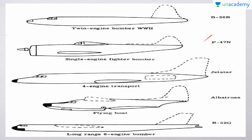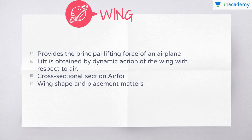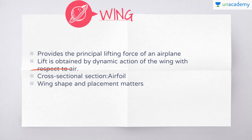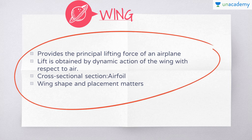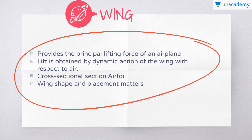The second part of the airplane is the wing. The wing provides the principal lifting force of the airplane. Lift is obtained from the dynamic reaction of the wing with respect to the air. The cross-sectional shape of the wing is known as the airfoil section. The airfoil section shape, the planform shape of the wing, and the placement of the wing on the fuselage all depend upon the airplane's mission and the best overall design compromise.